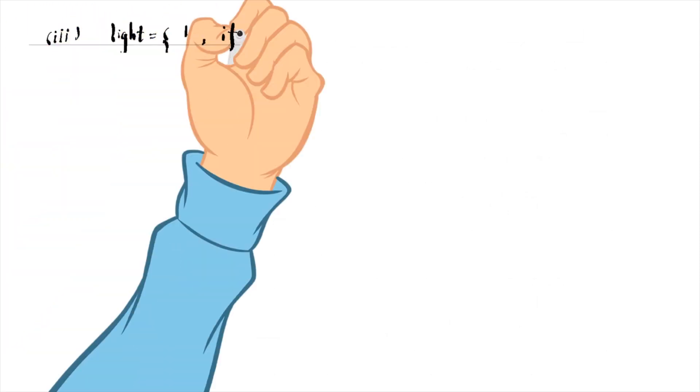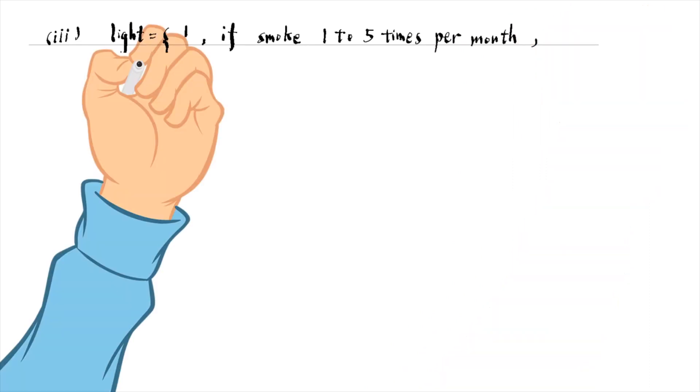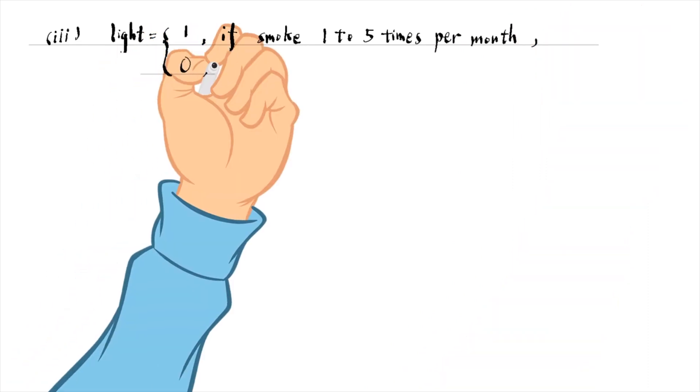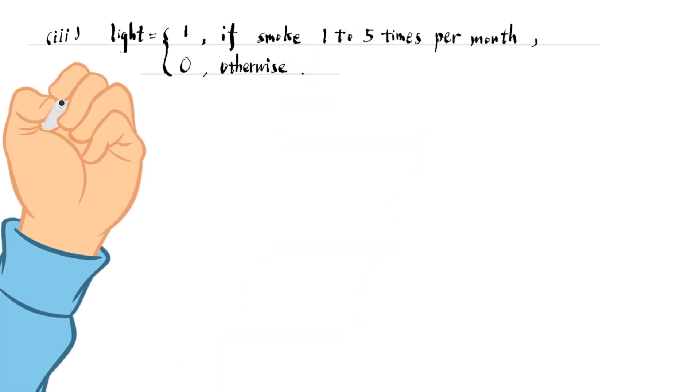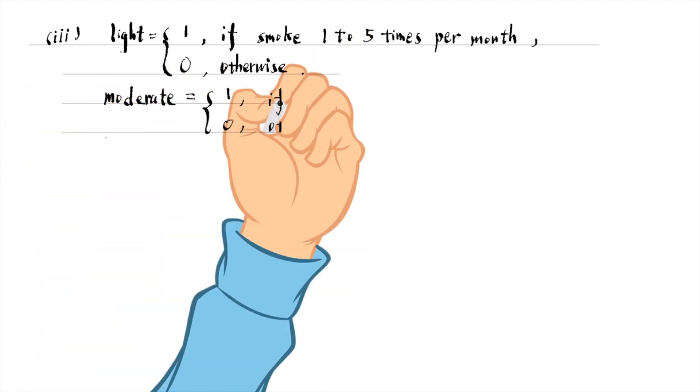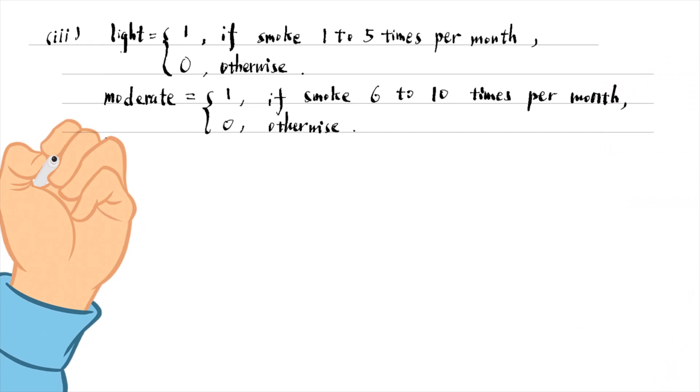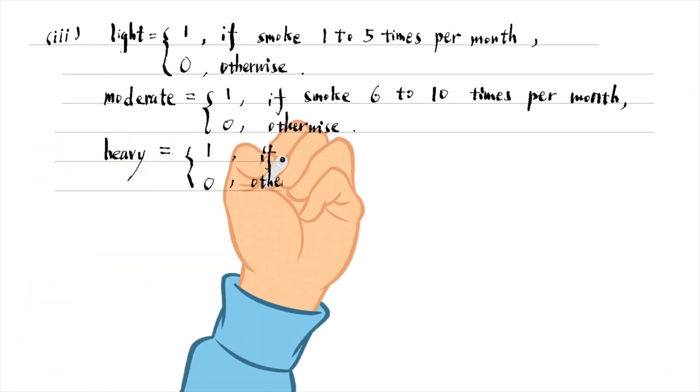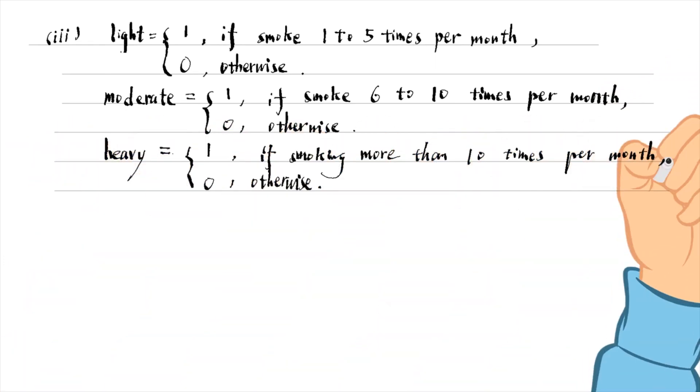For part 3, we divide people into four groups: long users, light users, moderate users, and heavy users. We add three dummy variables to the model with an overall intercept. We treat the long users as the base group. The dummy variable for light users is light. We define it equals 1 if the user smoked 1 to 5 times per month, and it equals 0 otherwise. We define the other two dummy variables the same way. The model is as follows.